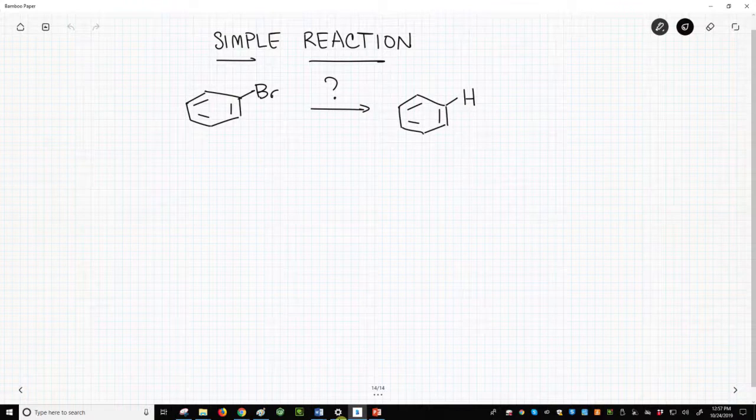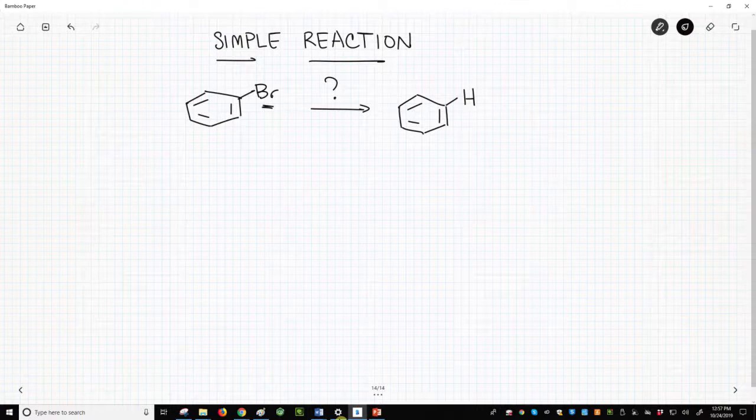On the screen, we have a transformation. We're going from having a bromine atom on a benzene ring to having no bromine on the ring.